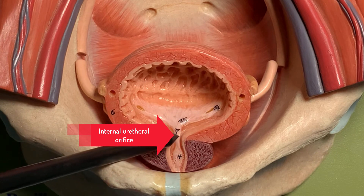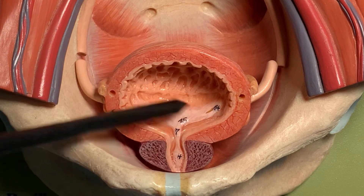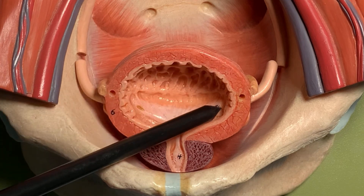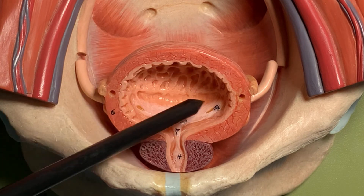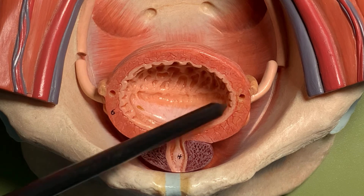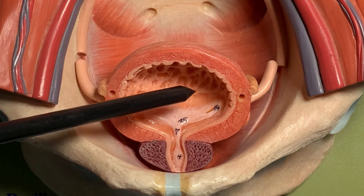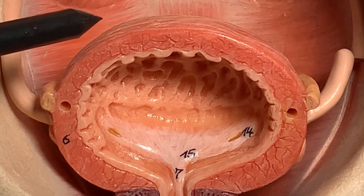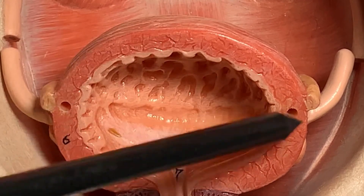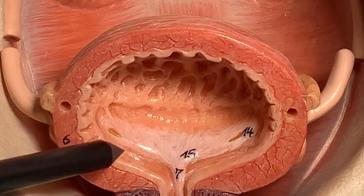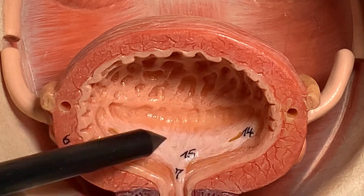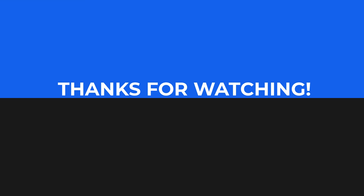We can see the ureteric orifices and the internal urethral orifice, which is the beginning of the urethra. The whitish triangular area is given the name trigone. At the two upper ends are the internal openings of the ureters. Zooming in to see more detail — as the pelvic ureter runs through the wall, these are the internal openings of the ureter.